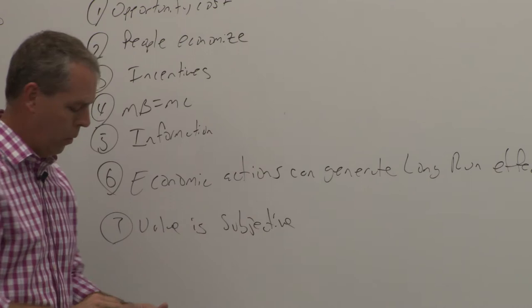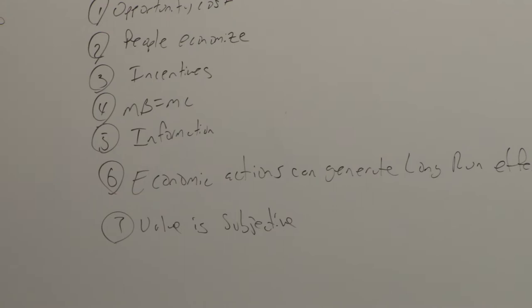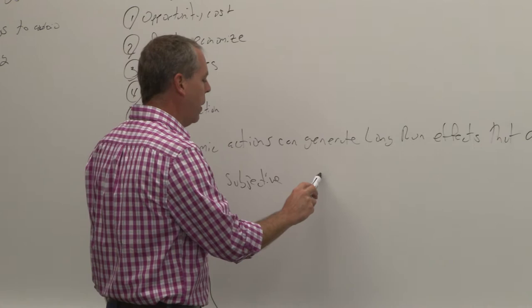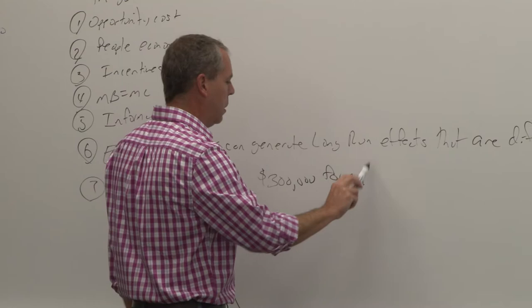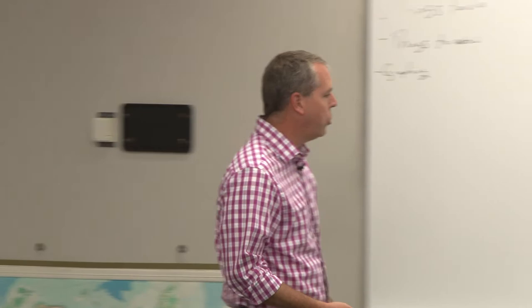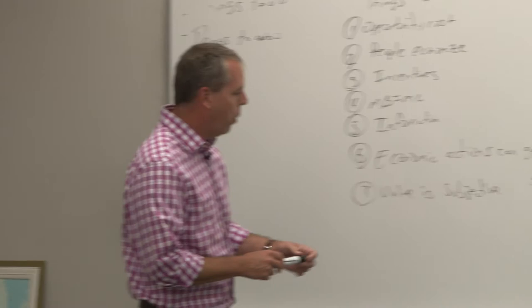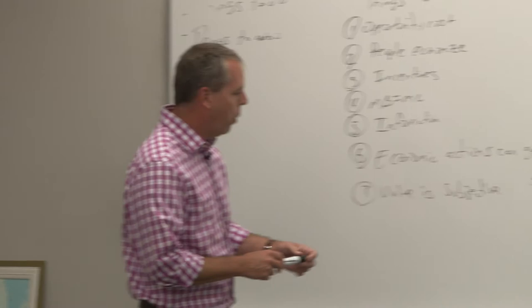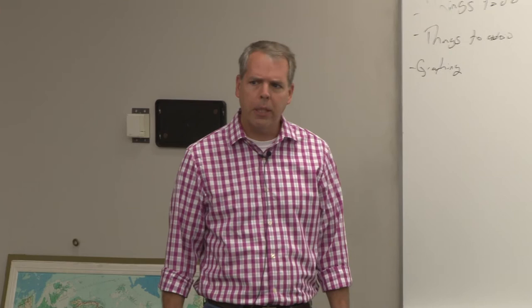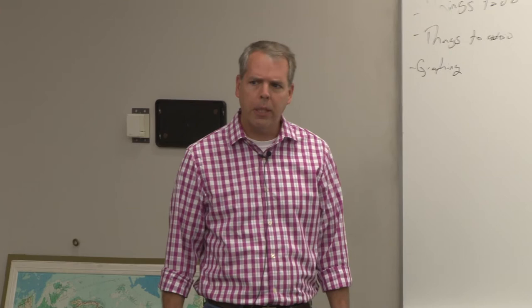Number seven. Value is subjective. We cannot go out and objectively measure value. You can't do that. If I think my house is worth $300,000, there's really only one way to know if my house is worth $300,000. And, what is that? To see if somebody's going to buy it. I can't just go out and say, this house is worth $300,000.